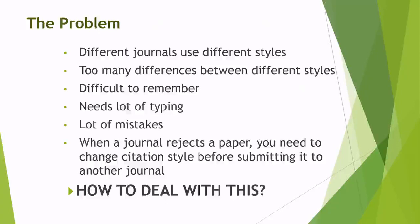The problem is obvious — too many journals exist and each follows a different style, with too many differences between styles. Sometimes you use a full stop after the surname, sometimes you don't; sometimes you use a journal abbreviation, sometimes the full title; sometimes the year comes immediately after the author, sometimes at the end. It is very difficult to remember the details of each referencing style, it requires a lot of typing, there are chances of mistakes, and when a journal rejects a paper you need to change the citation style before submitting elsewhere.